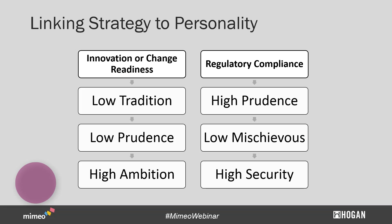You might be wondering, how do we do that? We spend a lot of time at Hogan linking strategy to personality. We at Hogan are really in the business of understanding people. We would consider people to be the most consequential and even potentially dangerous forces in our environment. Knowing something about the people in your organization is going to help anyone survive, prosper, and grow — or potentially fail.